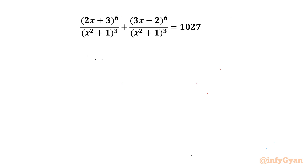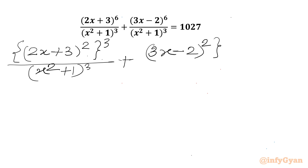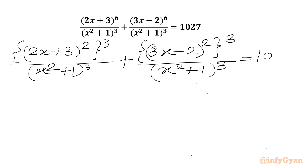Welcome back to Infigyan, my dear friends. In this video we have one very interesting rational equation problem. So let's get started. Straight away we can write (2x + 3)^6 as a whole square and then whole cube, over (x² + 1)³, plus (3x - 2)^6 over (x² + 1)³, equal to 1027.